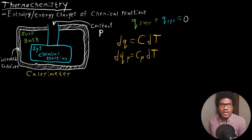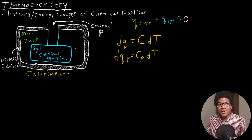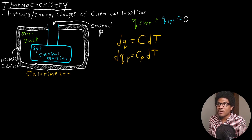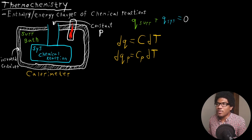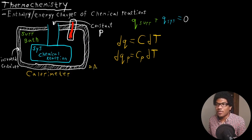When dealing with the calorimeter or most thermochemistry, you're mostly going to be making measurements in the bath. Just like with the bomb calorimeter, there was no thermometer being put inside the vessel or inside the reaction container — all the measurements are done outside the container, in the bath. So if we add a thermometer to this calorimeter, it would be measuring temperature but not in the reaction vessel; it's going to be in the bath. All measurements are made in the surroundings.